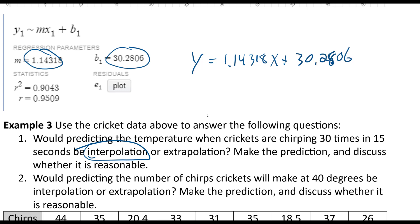So if we're talking about it being 30, Y would be 1.14318 times 30 plus 30.2806.